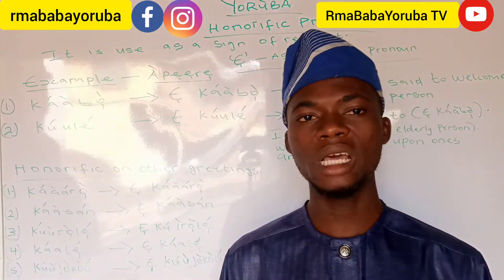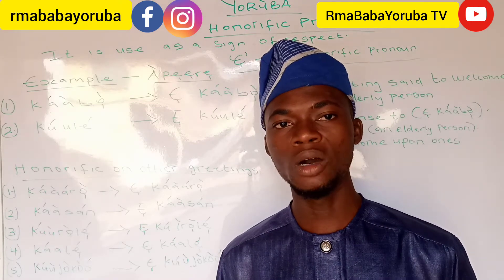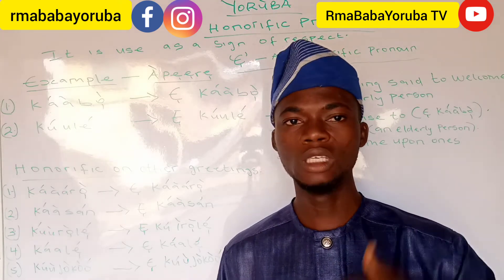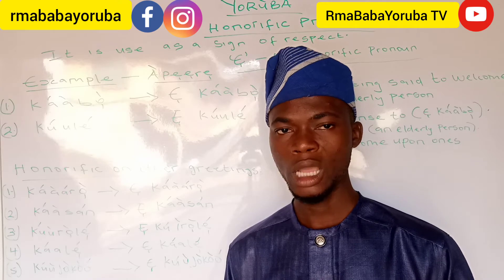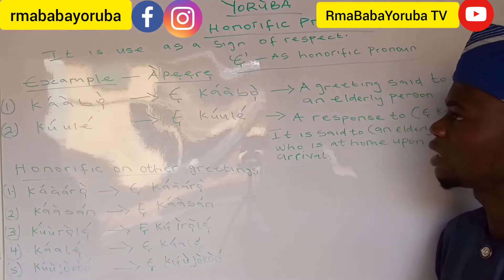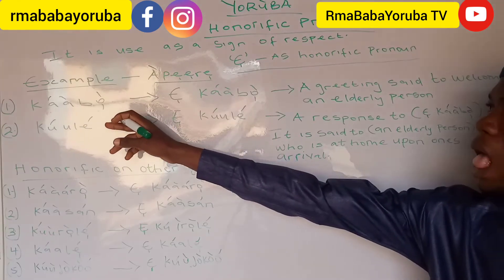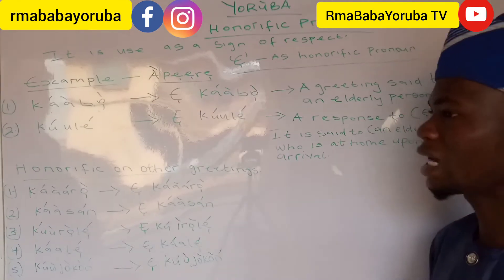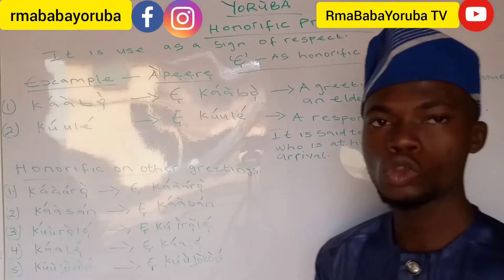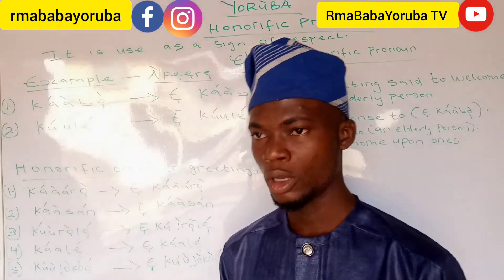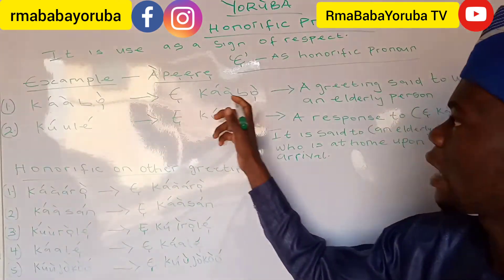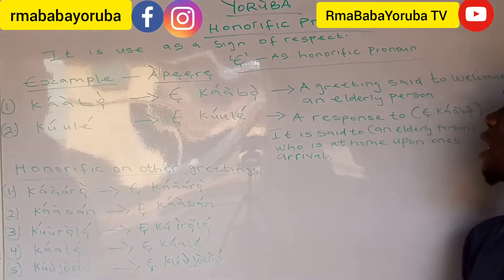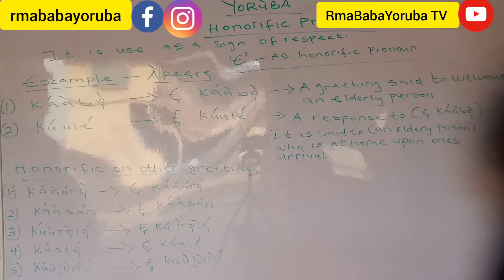When we are greeting an elderly person, we must make use of the honorific pronoun 'e' in the greeting. For example, 'kaabo' is said to a mate or to a younger person. But when we want to say it to an elderly person, it will be 'e kaabo' — a greeting said to welcome an elderly person.